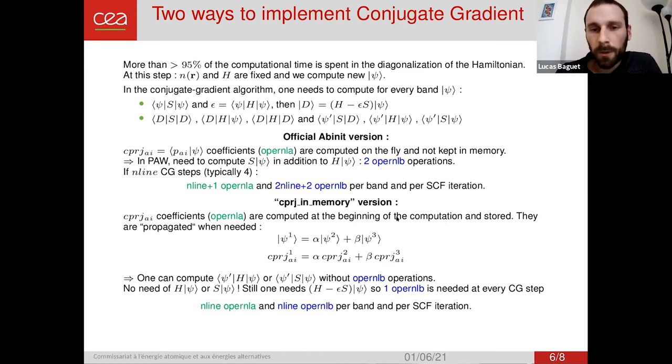Obviously, this comes at the cost of implementation work and sometimes we have, in order to save some OPER-NLA operations, we have to propagate in some way the C-proj coefficients. So for example, if I compute at some point in the algorithm a new wave function from a linear combination of other wave functions, if we imagine I have already in memory the C-proj coefficients related to these wave functions, then, as it is a linear operation, I can compute the C-proj coefficients of that wave function just by a linear operation, not without calling OPER-NLA. So this is important to save a lot of computational work.